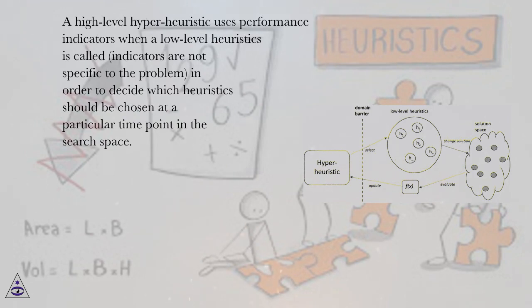A high-level hyper-heuristic uses performance indicators when a low-level heuristic is called. Indicators are not specific to the problem, in order to decide which heuristics should be chosen at a particular time point in the search space.